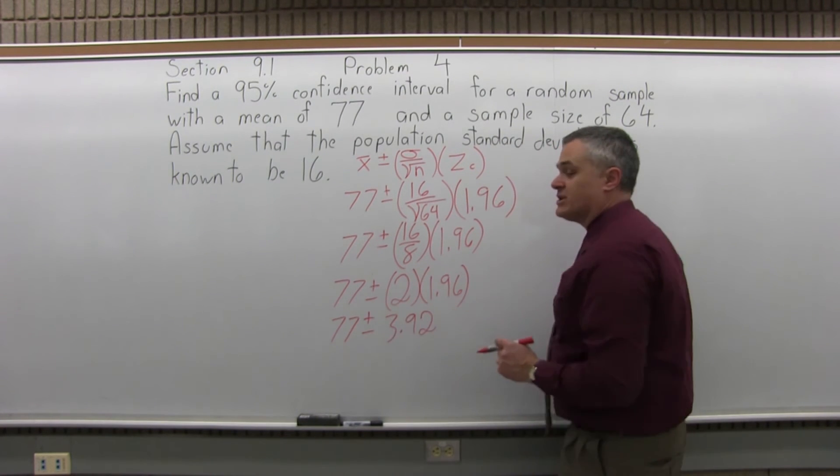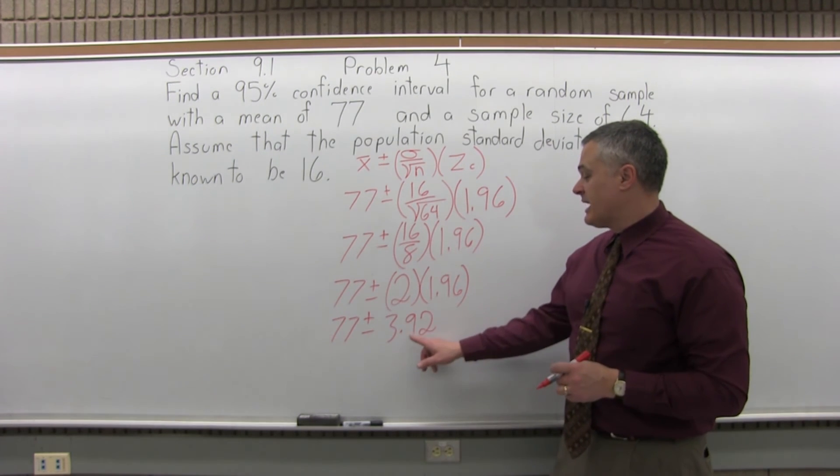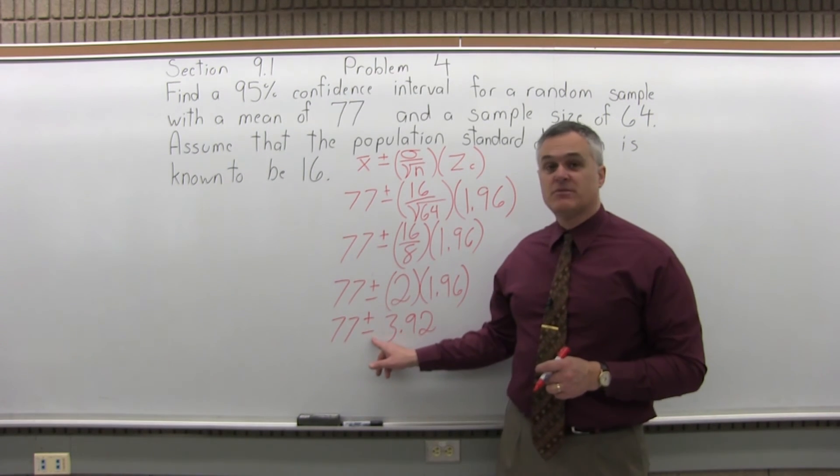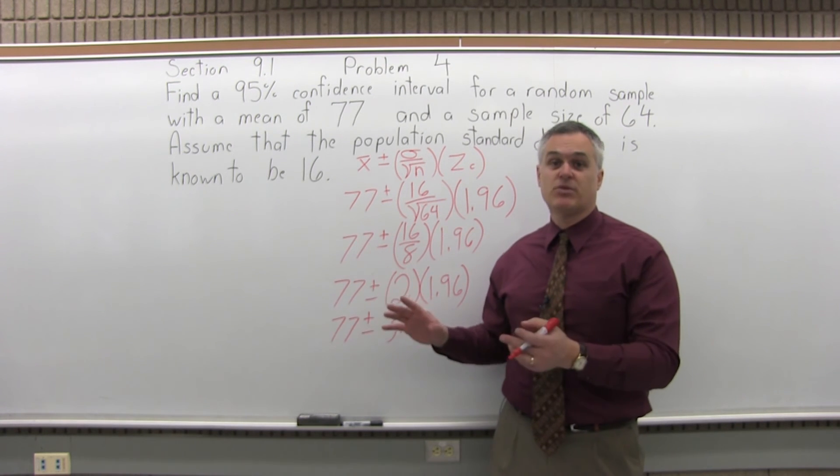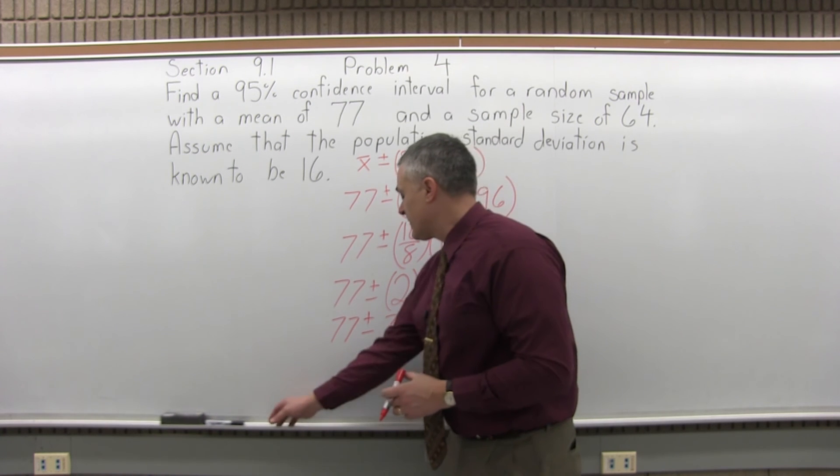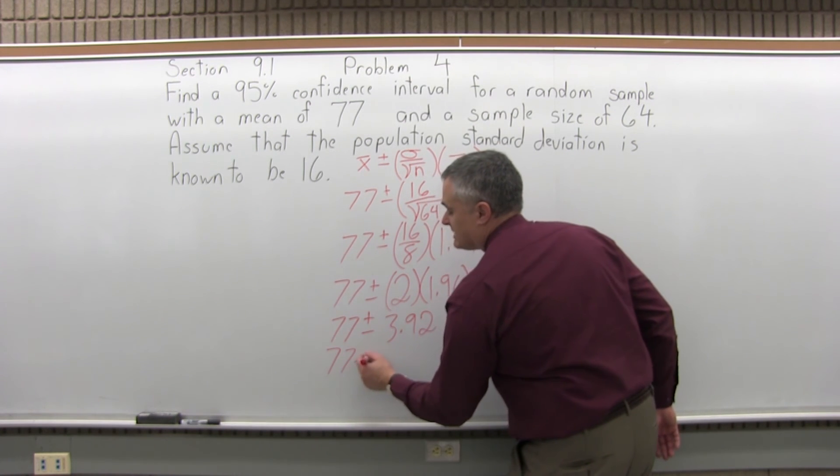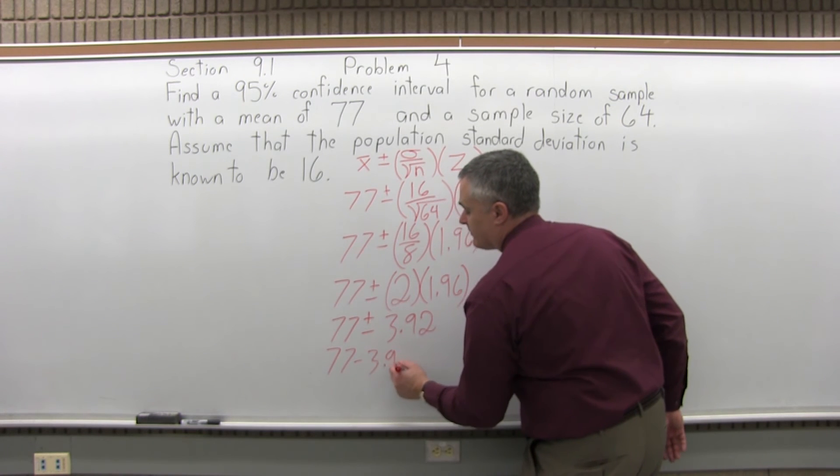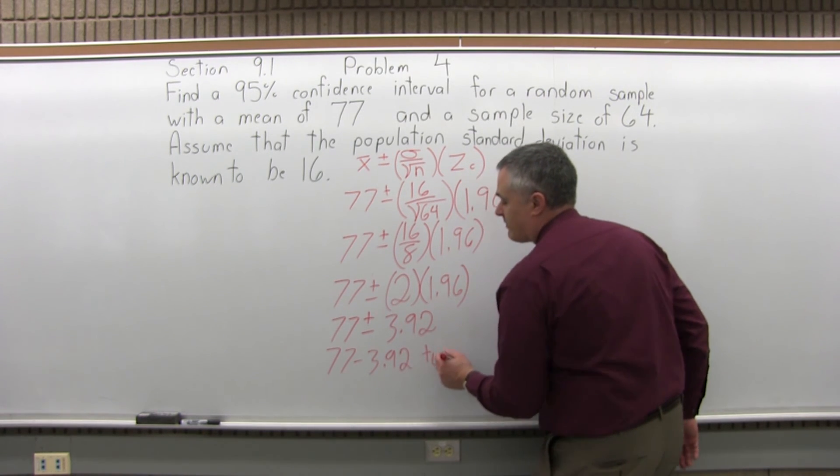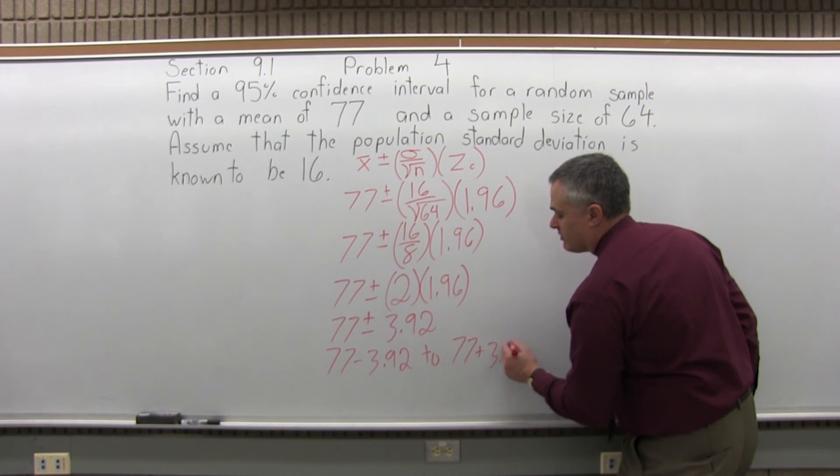So that's what you would call the margin of error. The margin of error is 3.92. And now that I have one number after the plus and minus, I can split this confidence interval into a separate plus and a separate minus for the low end and the high end of the interval. So I like to put the low end first. The low end for this interval will be 77 minus 3.92, and the upper end of the interval will be 77 plus 3.92.